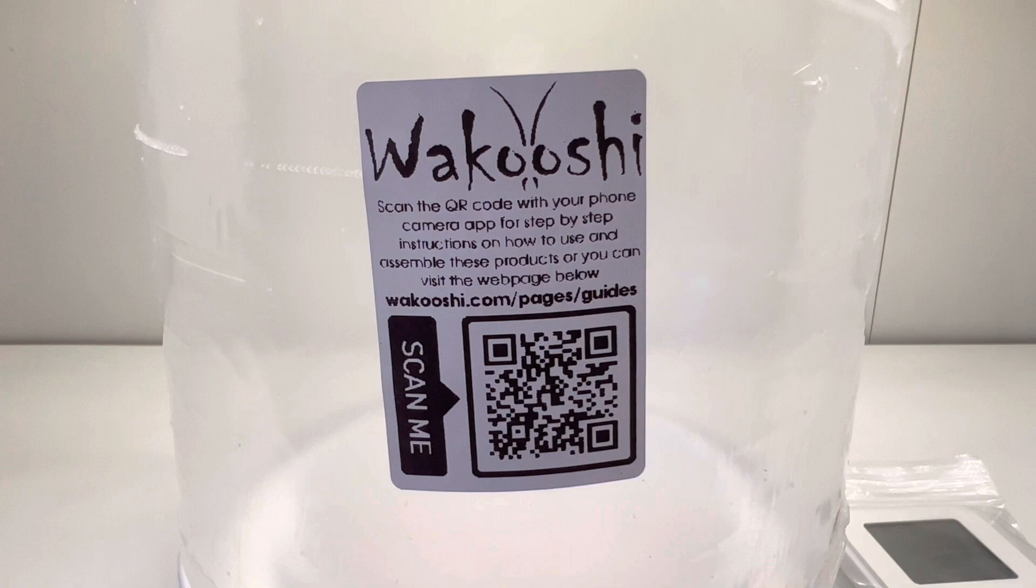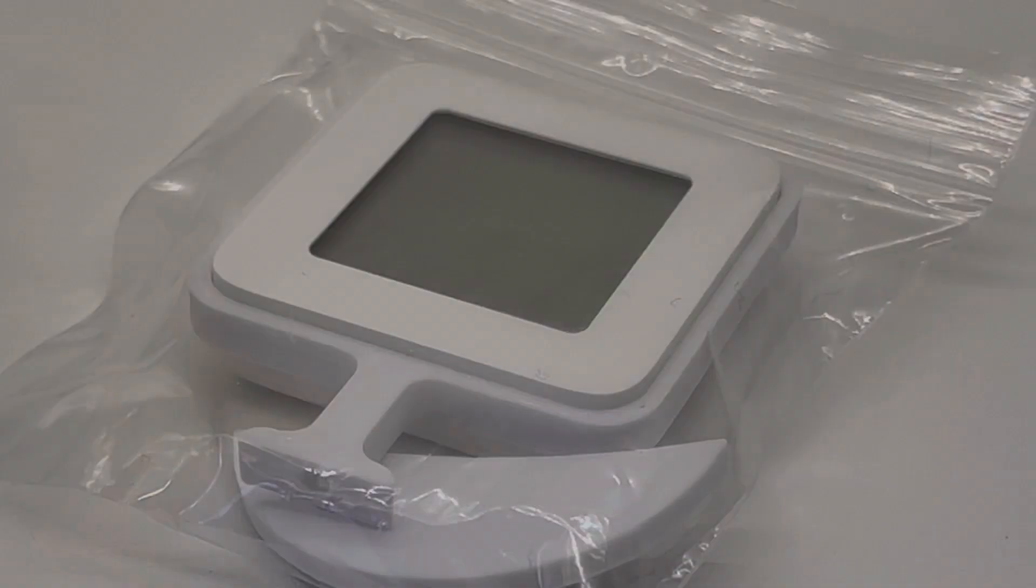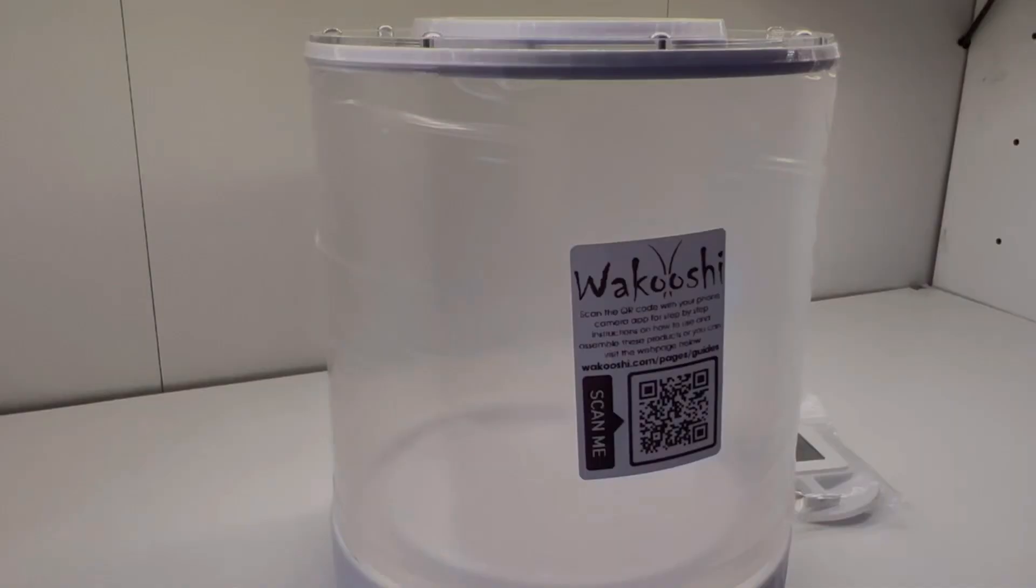So this is the first of a larger range of leafcutter pods and accessories coming from Wakushi. A founding pod is what you would start with. When you get your colony it'll be around the golf ball size in the majority of cases. You'd only need this one pod.